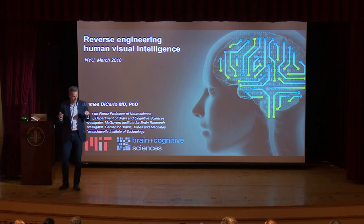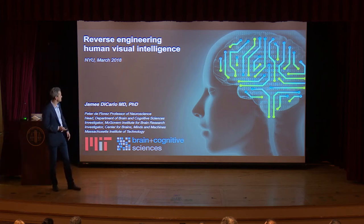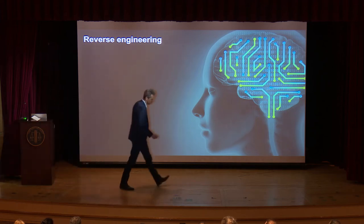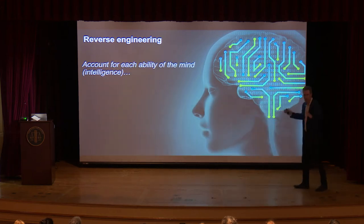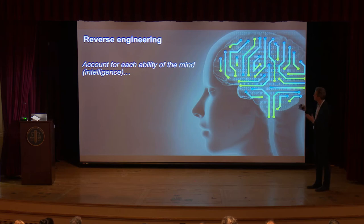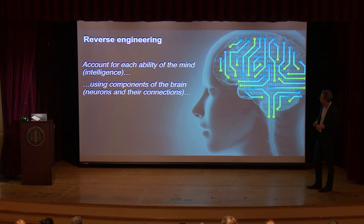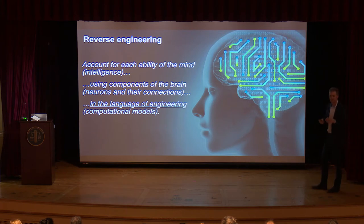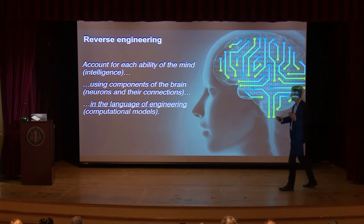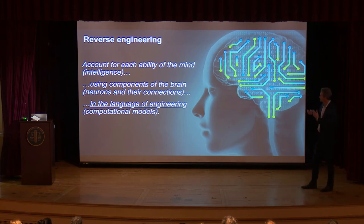That's just a provocative title. I'm not going to talk about all of visual intelligence, but I want to talk about the term 'reverse engineering.' What that means for me is we, as a group, have a goal to account for each ability of the mind — which I'll broadly call intelligence — using components of the brain, which for systems neuroscientists often means neurons and their connections.